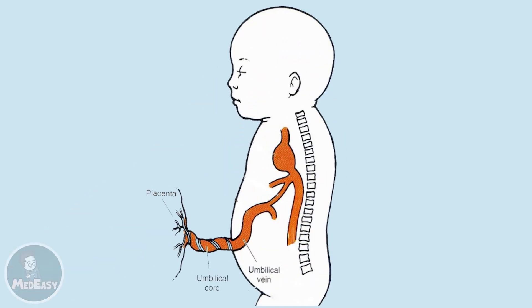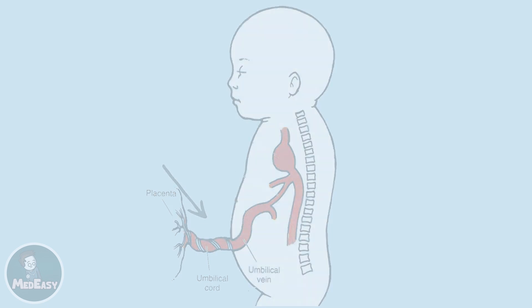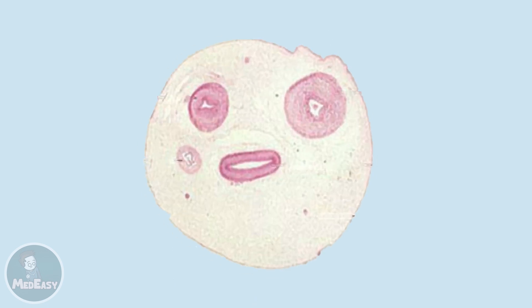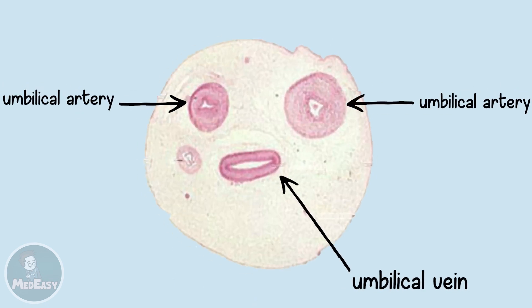Welcome to MedEasy. The fetal circulation begins from the placenta, which is a specialized organ connected to the fetus by the umbilical cord. The umbilical cord, as we can see in this cross section, contains one vein and two arteries.